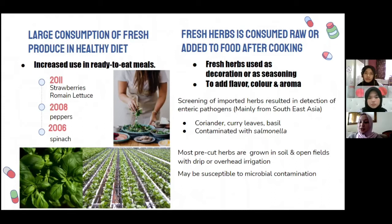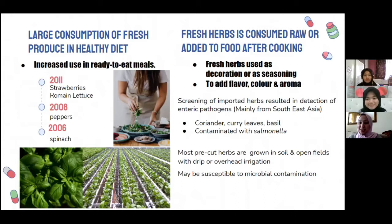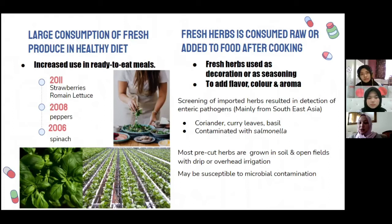The next trend is fresh herbs, which are gaining popularity in culinary practice, especially in Western European countries. Previously, herbs could be bought as whole plants, but nowadays they are sold as pre-cut herbs, used as decoration or seasoning to add flavor, color, and aroma. Several screenings of imported herbs resulted in detection of enteric pathogens, mainly from Southeast Asia — specifically from India and Thailand. Herbs contaminated with Salmonella include coriander, curry leaf, and basil.